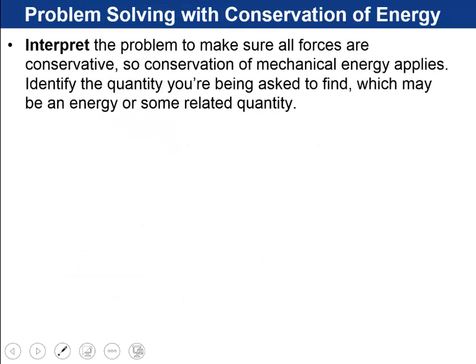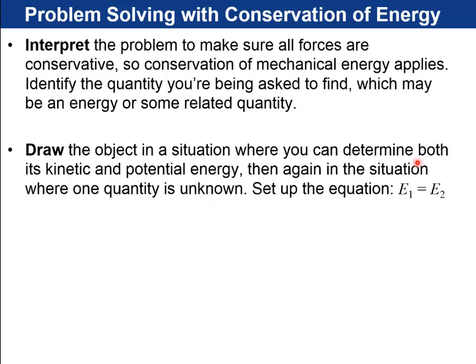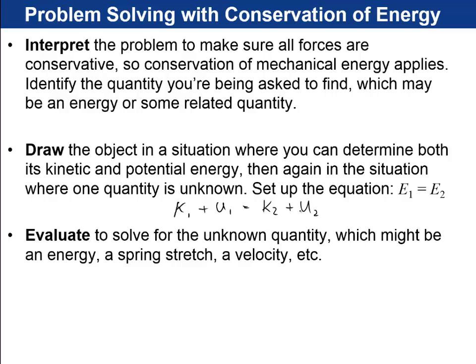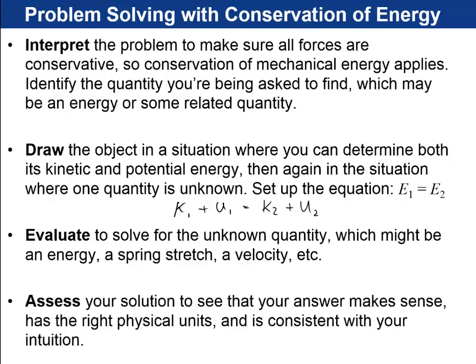So let's go over Wolfson's problem solving strategy, this IDEA. So first step is interpret the problem, make sure that all the forces are conservative, so conservation of mechanical energy applies here. Identify the quantity that you're being asked to find, write down your knowns and unknowns. Draw the object in a situation where you can determine both its kinetic and potential energy, and then make another drawing in the situation where something's unknown. And then you set up your equation E1 equals E2, and what that means is that the kinetic one plus potential one equals the kinetic two plus potential two. These things are the same by conservation of energy, and these are two different times T1 and T2. So then you evaluate this equation, solve for the unknown quantity, which might be an energy, a spring stretch, could be a velocity, and then finally assess your solution. Look to make sure your answer makes some sense consistent with your intuition, has the right units, etc.